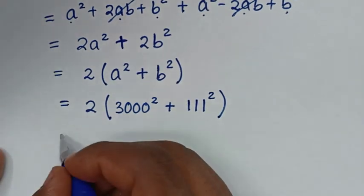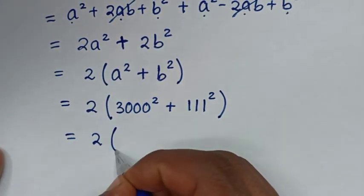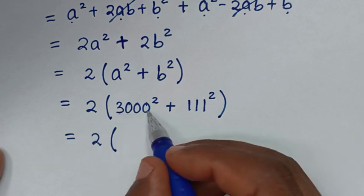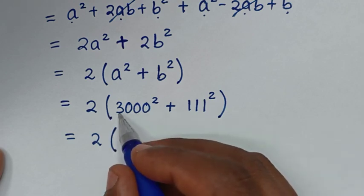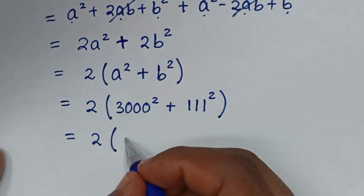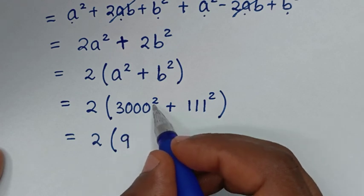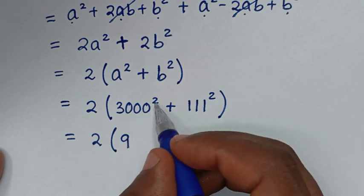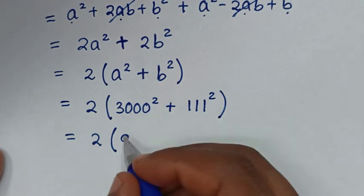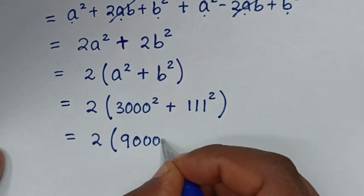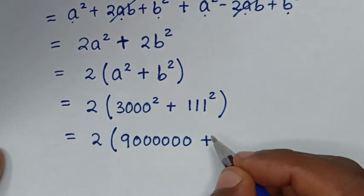Then, it will be equal to 2 bracket: the square of 3,000 is the same as 3,000 times 3,000 — whereas 3 times 3 is 9, then with 3 zeros times 3 zeros giving 6 zeros — so it will be 9,000,000.